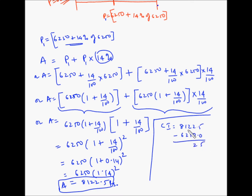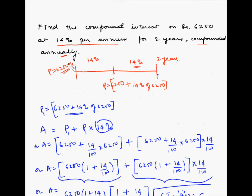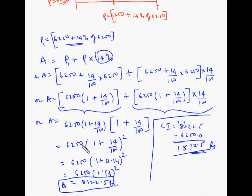Performing the subtraction: 8122.5 minus 6250.0 gives 1872.5 rupees. So the compound interest you will get at the end of 2 years is 1872.5 rupees. This was the long way to find the answer.